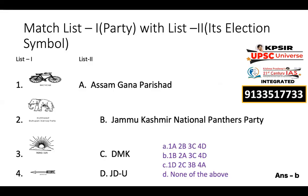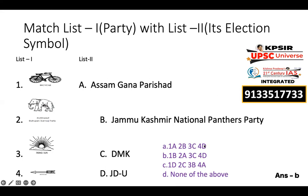Next is a matching question on election symbols. List one includes: bicycle, elephant, rising sun, and arrow. The bicycle is associated with the Samajwadi Party, the elephant with BSP, the rising sun with DMK, and the arrow with the Jammu Kashmir National Panthers Party. The answer is B.